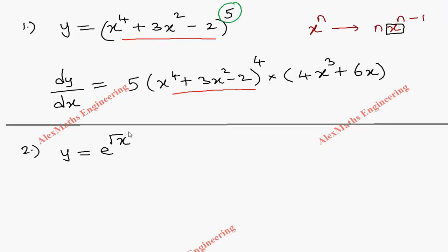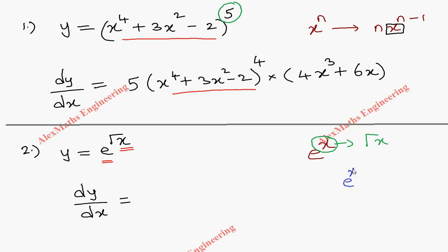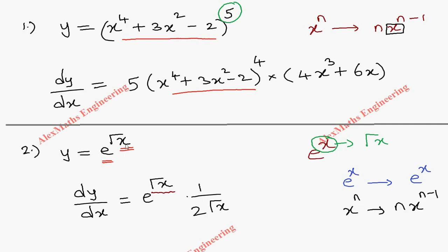Next question: y = e^(√x). Generally we have the exponential function e^x, but here instead of x we have another function √x. So the outer function is e and the inner function is √x. First we differentiate the outer function: differentiation of e^x is e^x, so e^(√x) differentiates to e^(√x). But once the outer function differentiation is completed, we differentiate the inner function. √x = x^(1/2), so its differentiation using x^n formula is 1/(2√x).